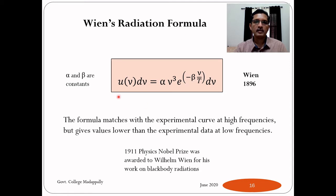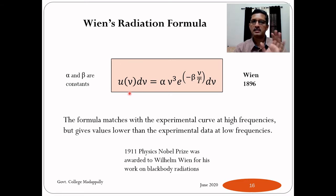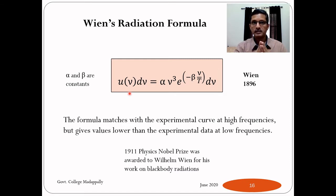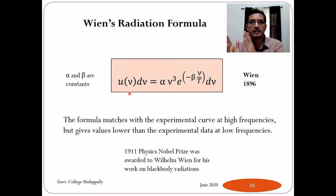The first formula proposed was by Wilhelm Wien, called Wien's radiation formula. The expression u(ν)dν represents the energy density of blackbody radiations in the frequency range ν to ν+dν. We need such a notation because the blackbody spectrum is a continuous spectrum — it increases, reaches some maximum, then decreases — so energy density continuously varies with frequency.